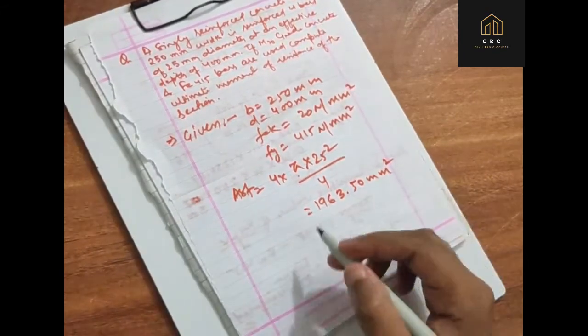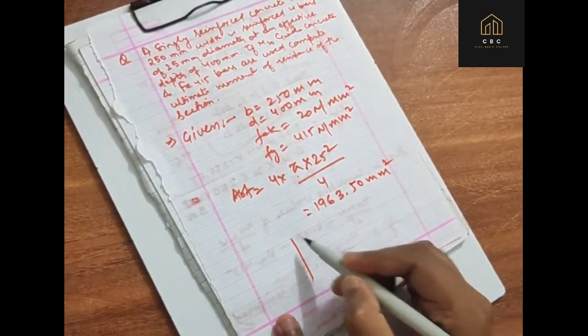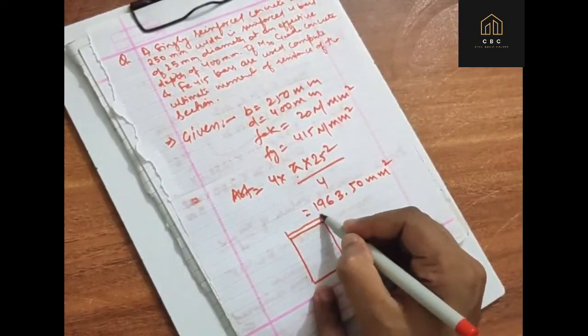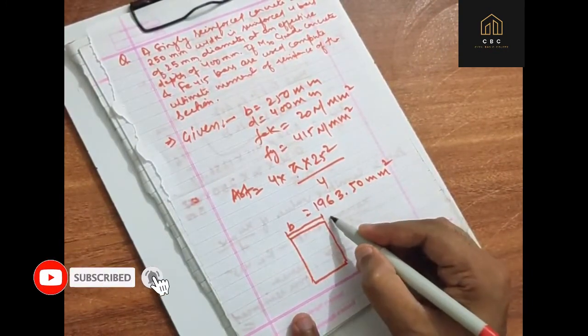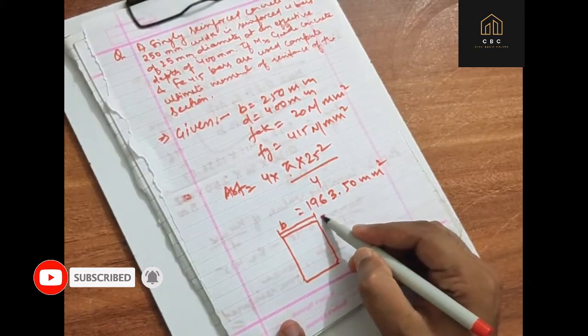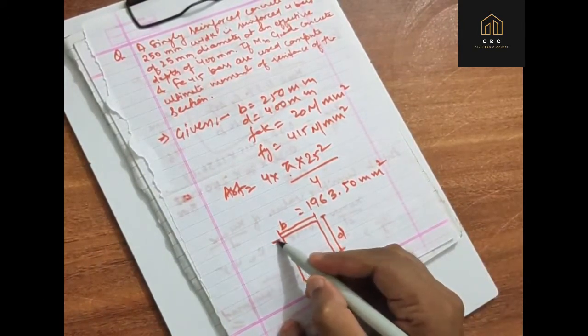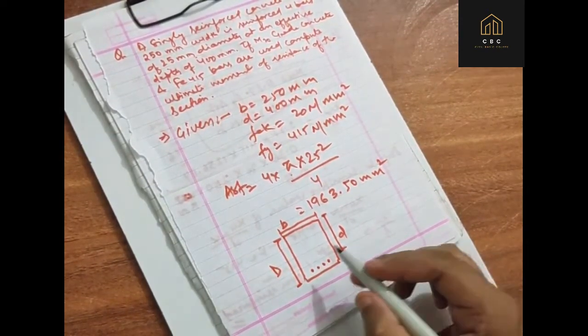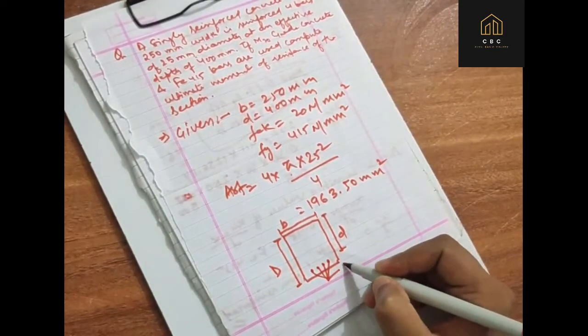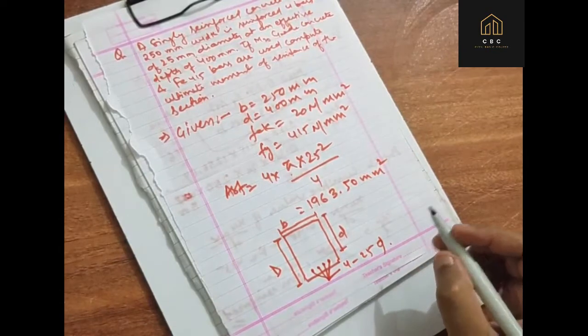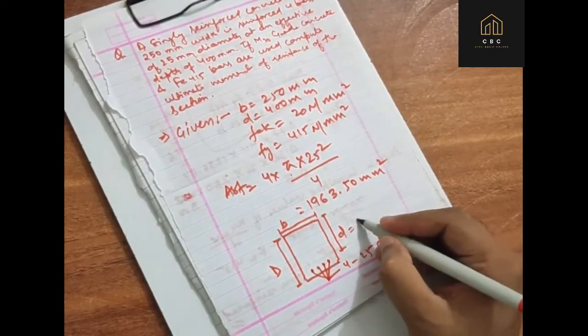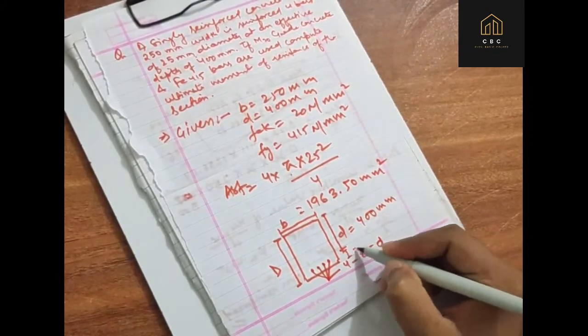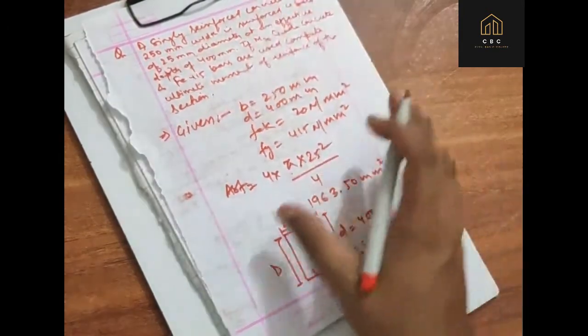Now let's make a figure. The width is 250 mm, AST is shown, the effective depth is 400 mm, and this is the clear cover.